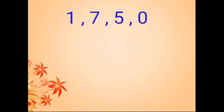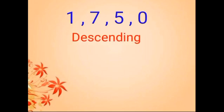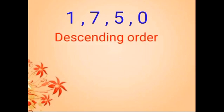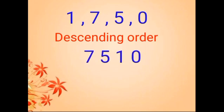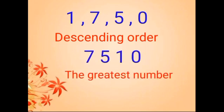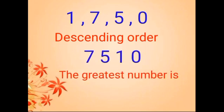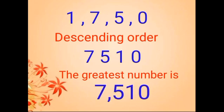Next, to form the greatest number, we arrange the digits in descending order. The descending order is 7, 5, 1, 0. So the greatest number is 7,510.